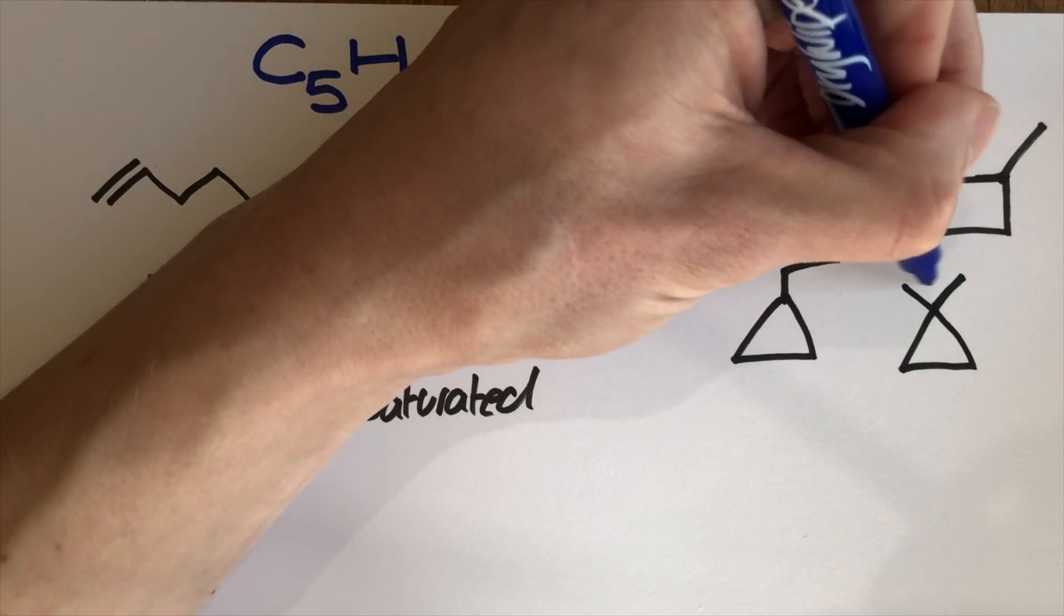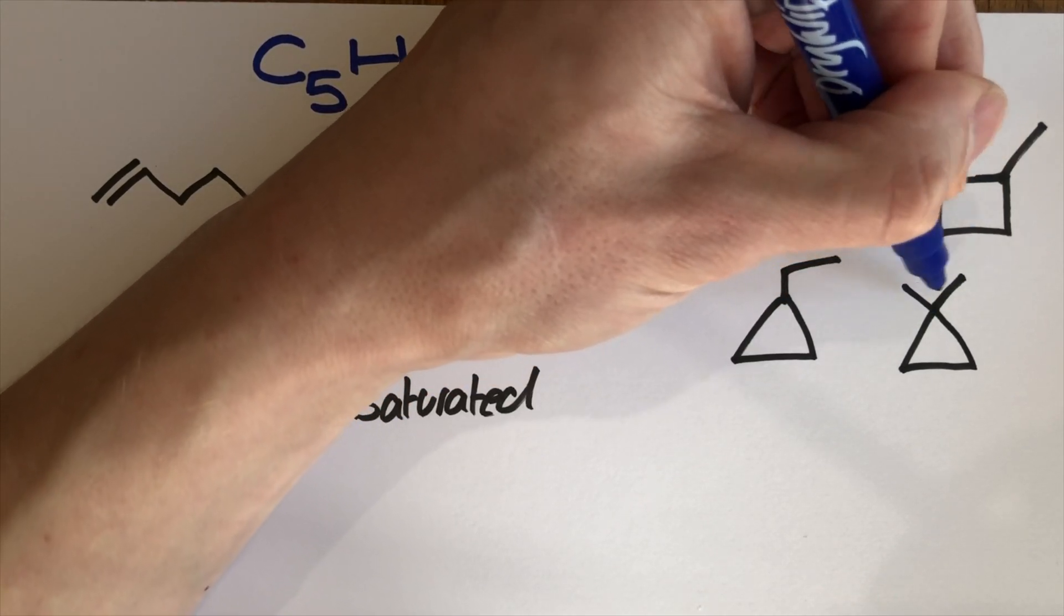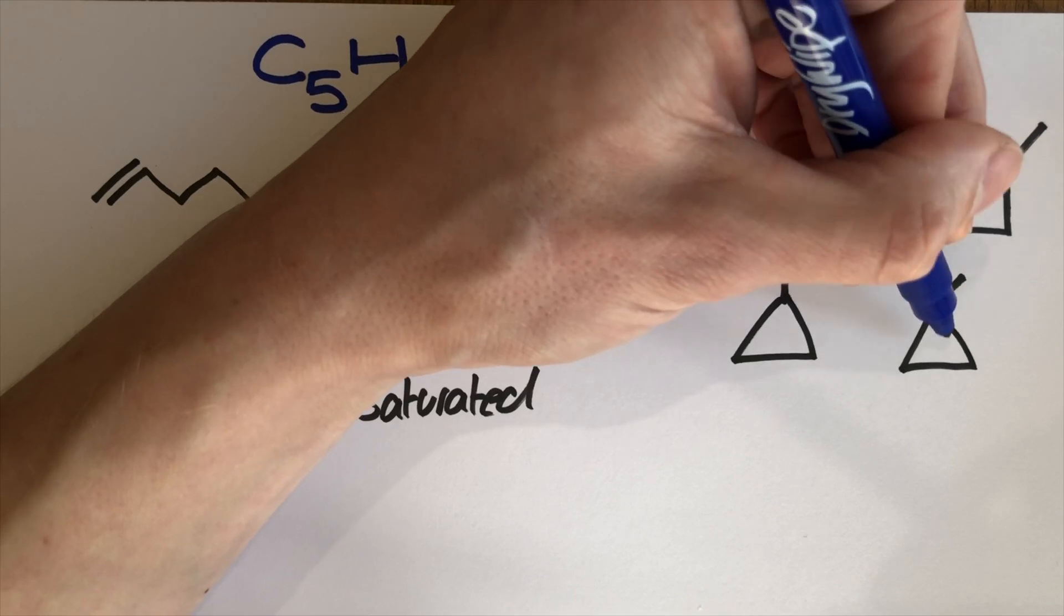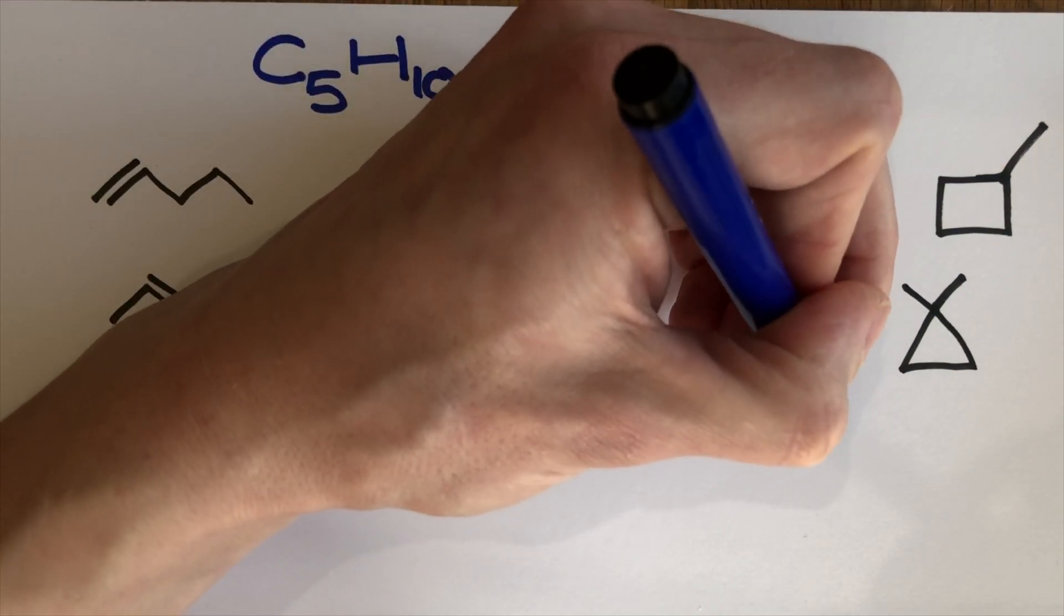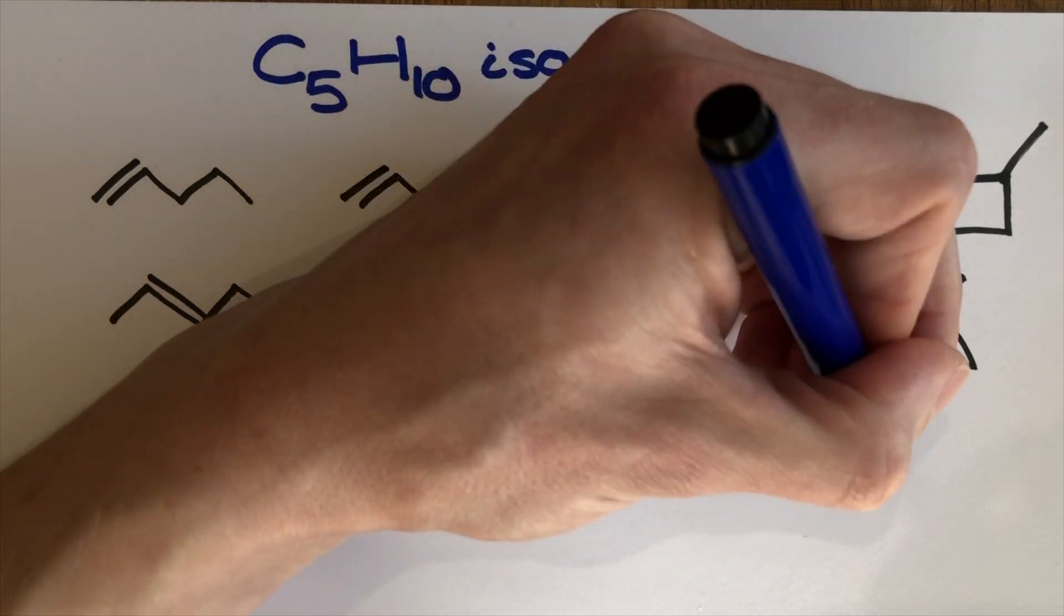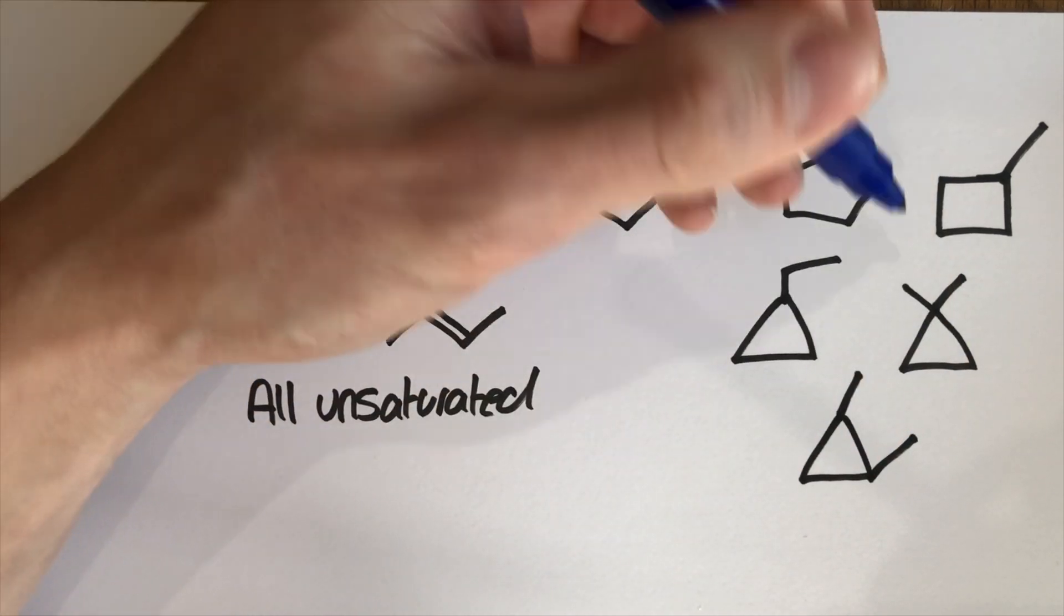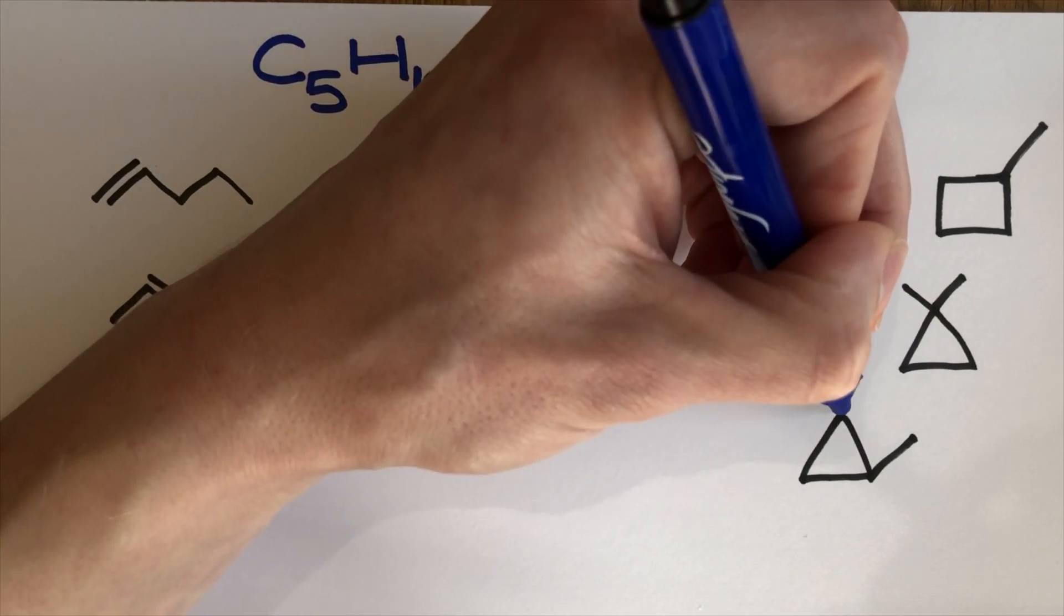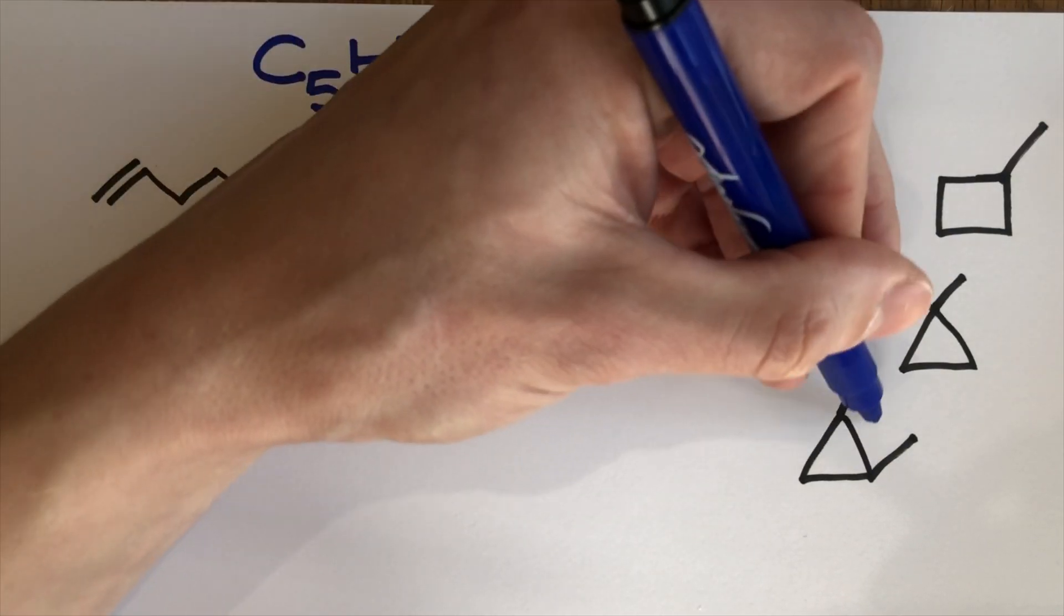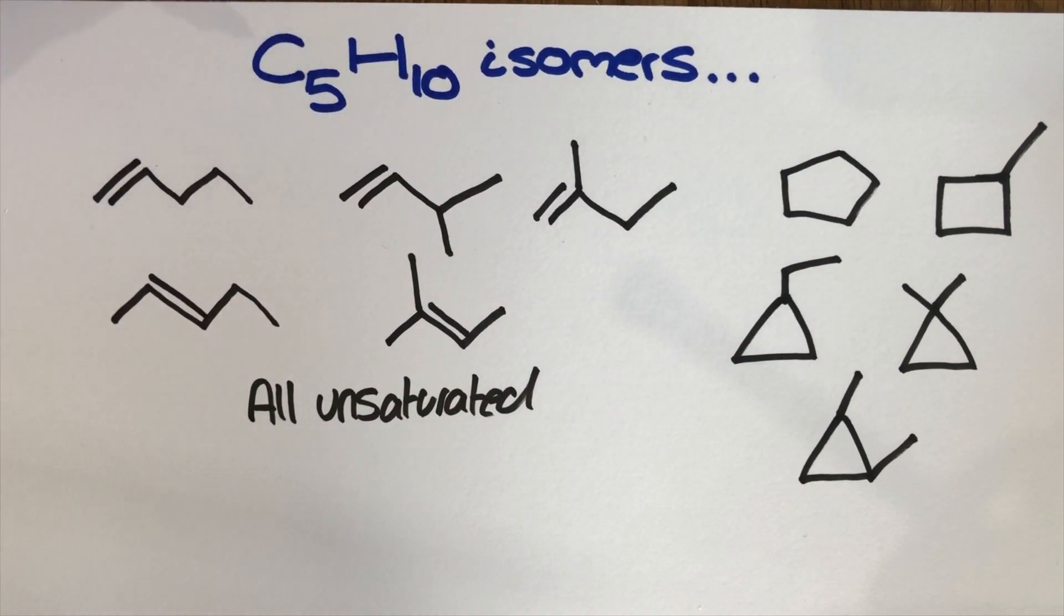And down here I could also put those two methyls onto different carbons and so that would give me 1,2-dimethylcyclopropane. They are all structural isomers of that formula.